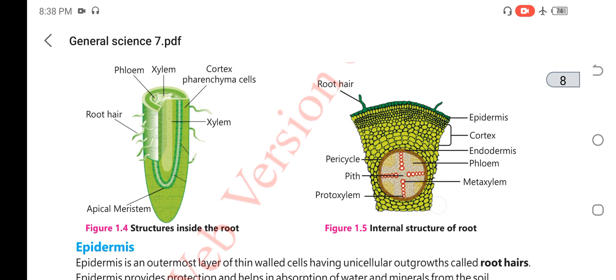Root hairs absorb water, which passes through the epidermis, and then the water goes to the cortex.